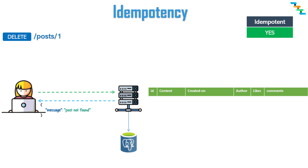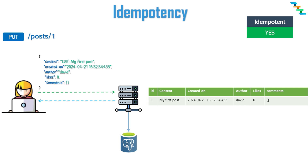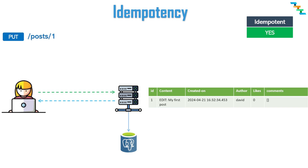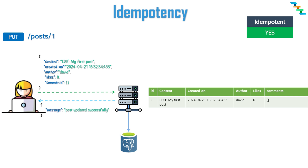Next is the PUT method, which is used to update or replace an existing resource on the server with the new data provided in the request. PUT requests are idempotent — the resource state on the server will remain the same if the identical PUT request is sent repeatedly with the same contents, as it replaces the entire resource. The first request updates the data in the database, and if the same request is retried, the entire resource is replaced again. So no matter how many times the same request is retried, there is no change in the server state.